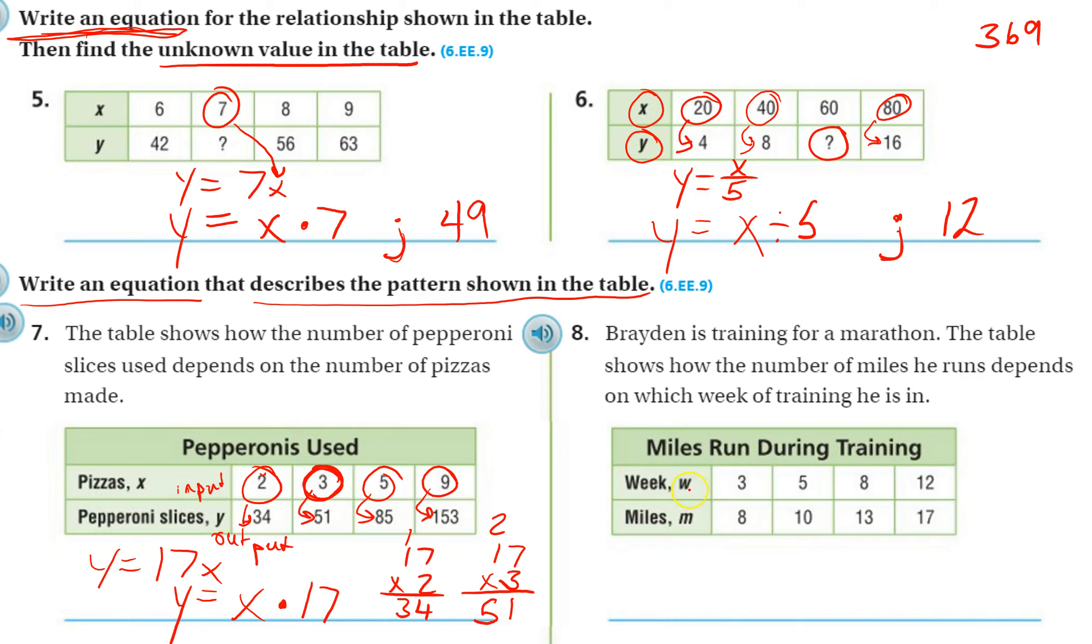Okay, same thing here. In number 8, Braden is training for a marathon. The table shows the number of miles he runs depends on which week of training he is in. So again, your top, this is your input. So you can think of this, even though it's a w, and we need to use the variables they're using, you can think of this as your x and this as your y. So we can put m equals. We want our y on one side. And this is considered our output. So this would be like our y. So m equals. And then what are we doing to w each time?